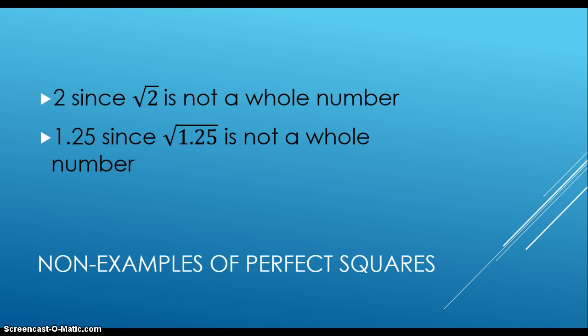Some non-examples: 2 is not a perfect square because the square root of 2 is not a whole number. And 1.25 is not a perfect square because the square root of 1.25 is not a whole number.